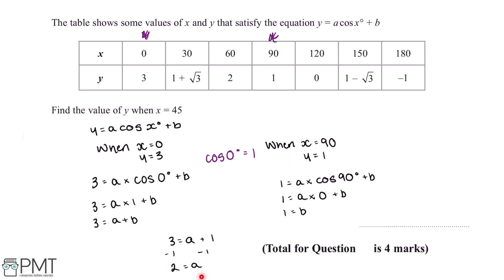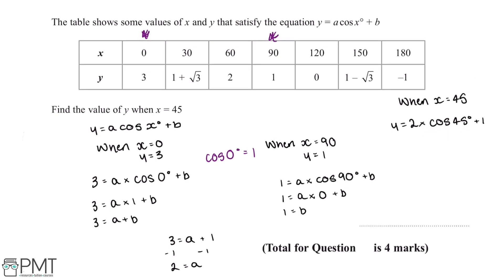Now we substitute the values a equals 2, b equals 1, and x equals 45 into the equation: y equals 2 multiplied by cos 45 plus 1. Cos 45 is another trigonometric ratio we're expected to know for the exam, and its value is root 2 over 2. So y equals 2 multiplied by root 2 over 2 plus 1, and 2 multiplied by root 2 over 2 gives us root 2. So y equals root 2 plus 1 when x equals 45.